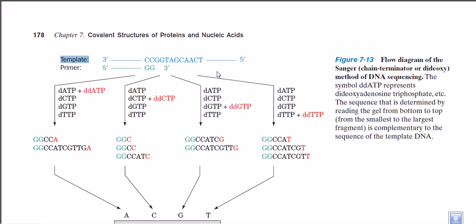Now, here is the clever trick to find out the sequence. Along with the normal nucleotide triphosphates, in four different test tubes we also use four individual types of specialized nucleotide triphosphates called dideoxynucleotide triphosphates, or ddNTPs. In the first test tube we use ddATP, in the second ddCTP, in the third ddGTP, and in the fourth ddTTP.